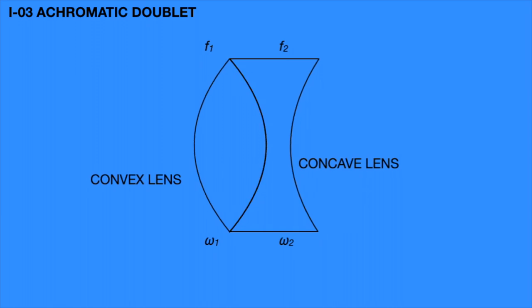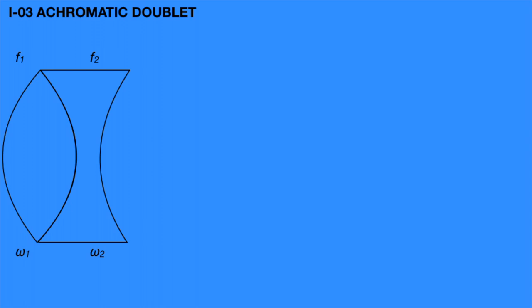A suitable combination of different materials of convex and concave lenses can minimize the chromatic aberration. The effective focal length for two contact lenses is: 1/F = 1/f1 + 1/f2, where capital F is the effective focal length. Assume this is equation 1.